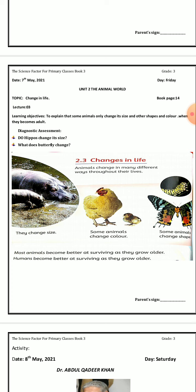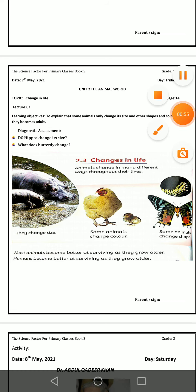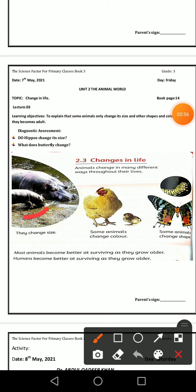Animals change in many different ways throughout their lives. You can see the picture of the baby hippo. The hippo looks the same as its mother — its features are the same as its mother. Hippos only change their size.